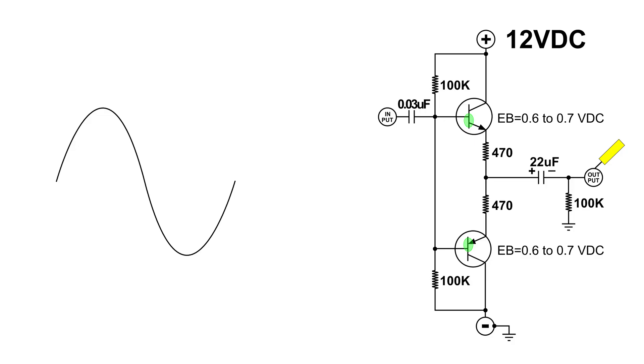Now to correct this problem, we need to add two compensating diodes. And they are connected right here between the two bases of each of those transistors.